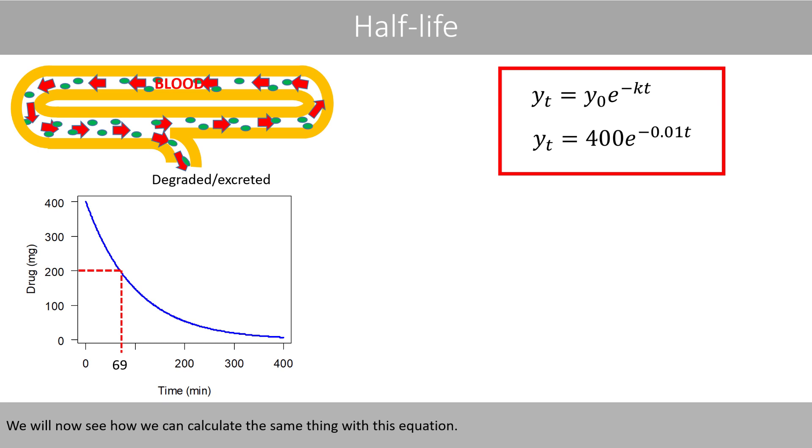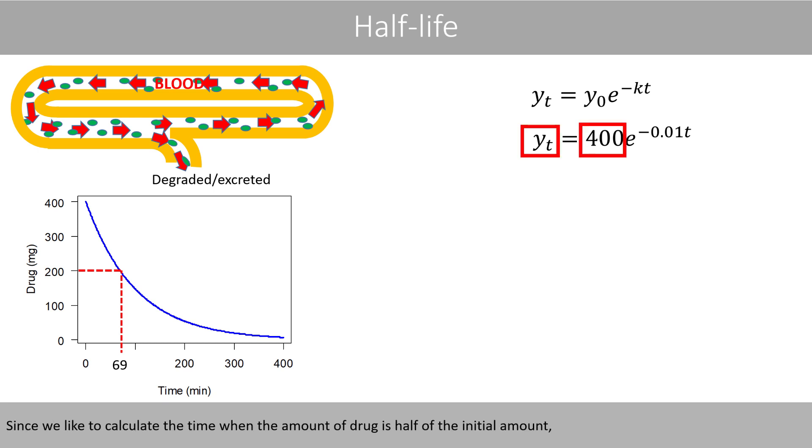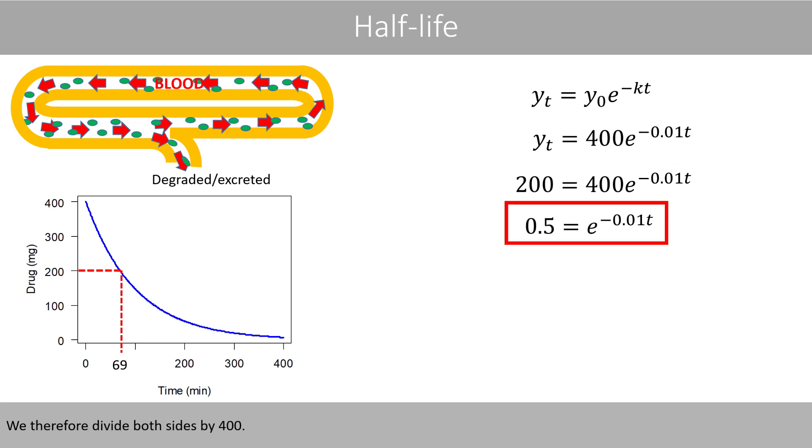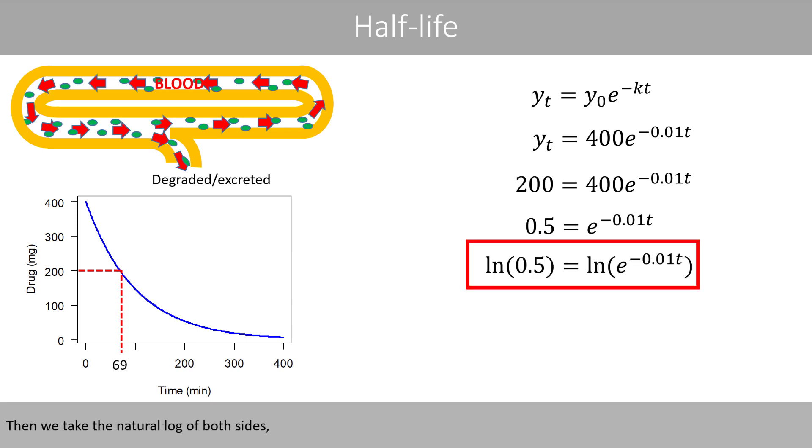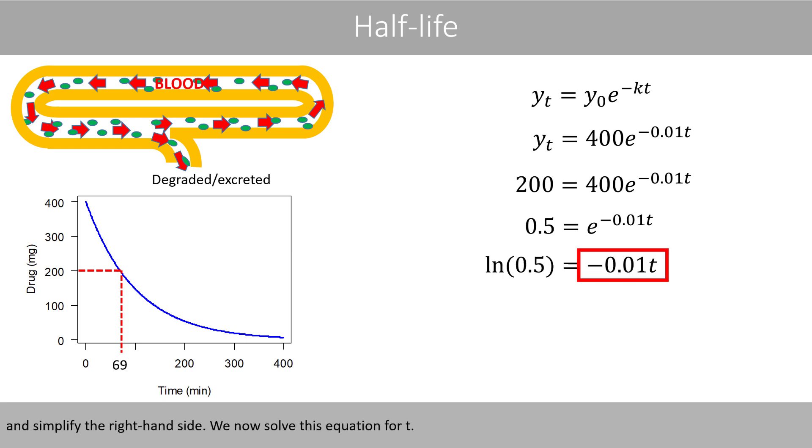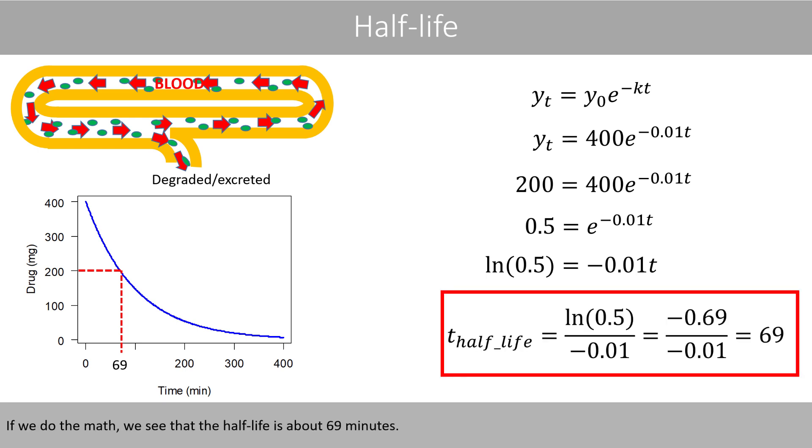We'll now see how we can calculate the same thing with this equation. Since we like to calculate the time when the amount of drug is half of the initial amount, we set the left-hand side equal to 200 because that is half of 400. We'll now solve this equation for t. We therefore divide both sides by 400. Then we take the natural log of both sides and simplify the right-hand side. We now solve this equation for t. If we do the math, we see that the half-life is about 69 minutes.